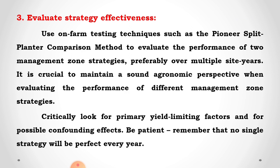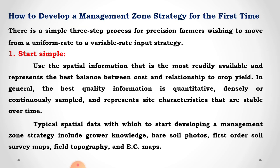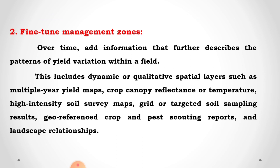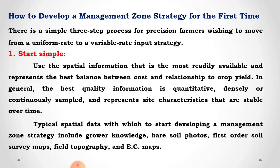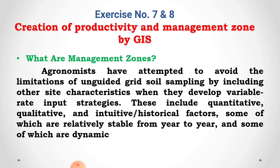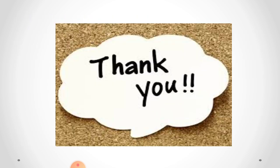These are the steps required for the development of management zones: first, start simple; second, fine-tune the management zone, which includes yield maps, fertility maps, crop canopy reflectance maps, survey maps, and grids; and third, evaluate strategy effectiveness. This completes exercise number seven on soil fertility map by GIS and exercise number eight on creation of productivity and management zone by GIS. Thank you.